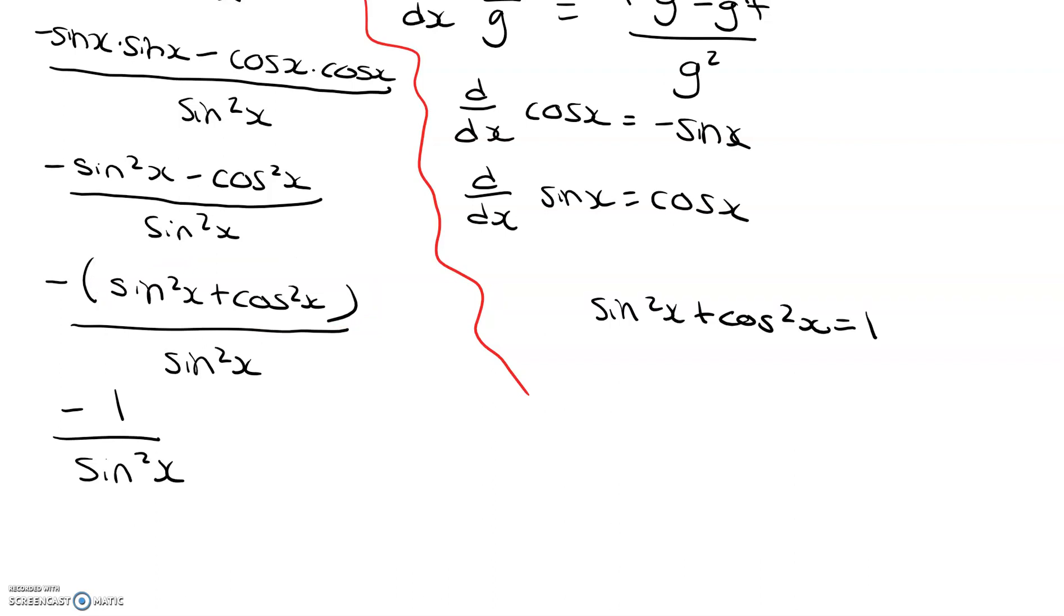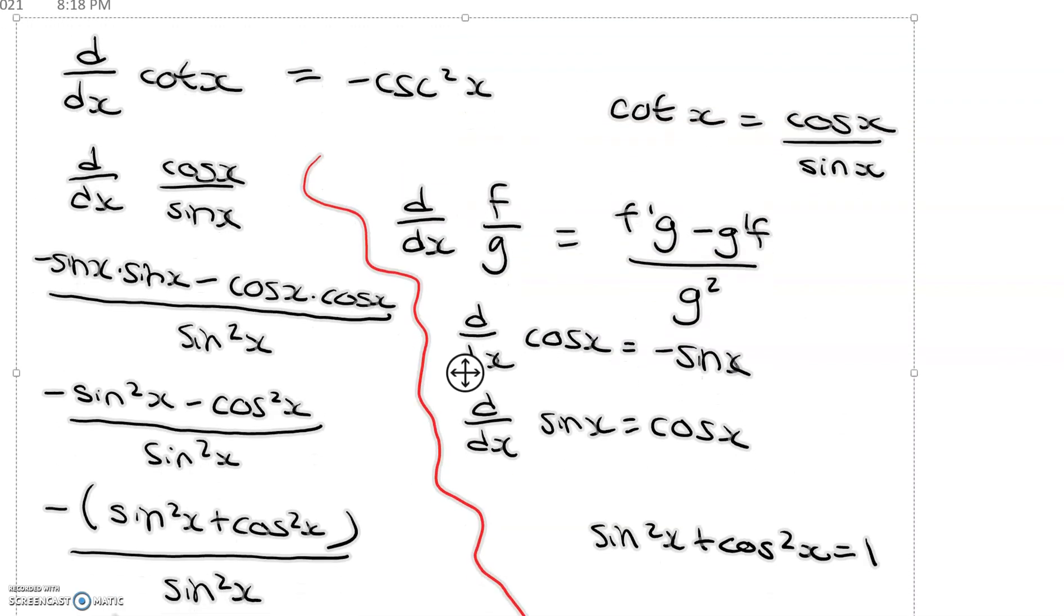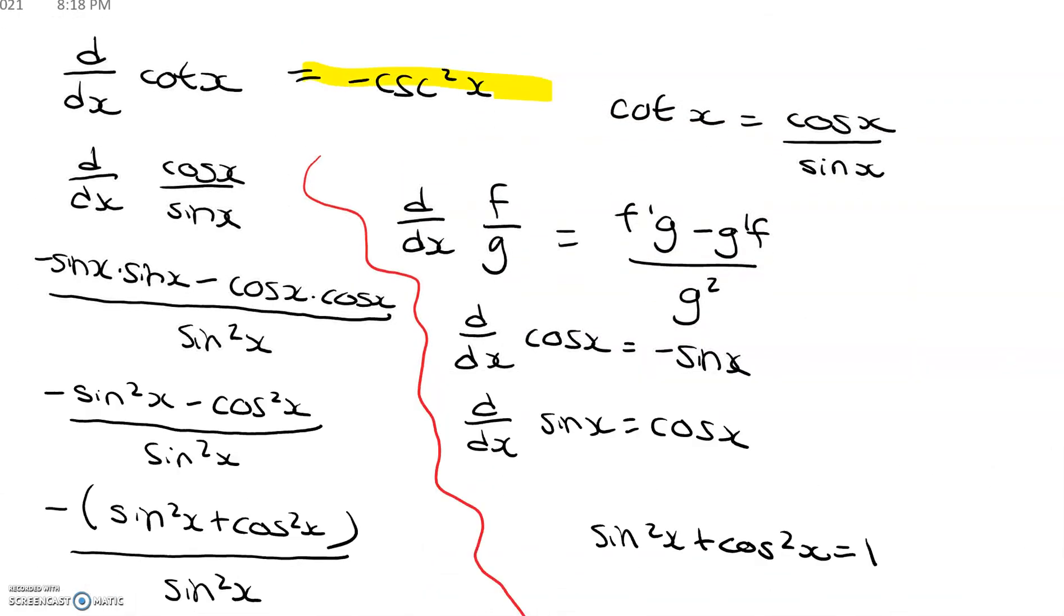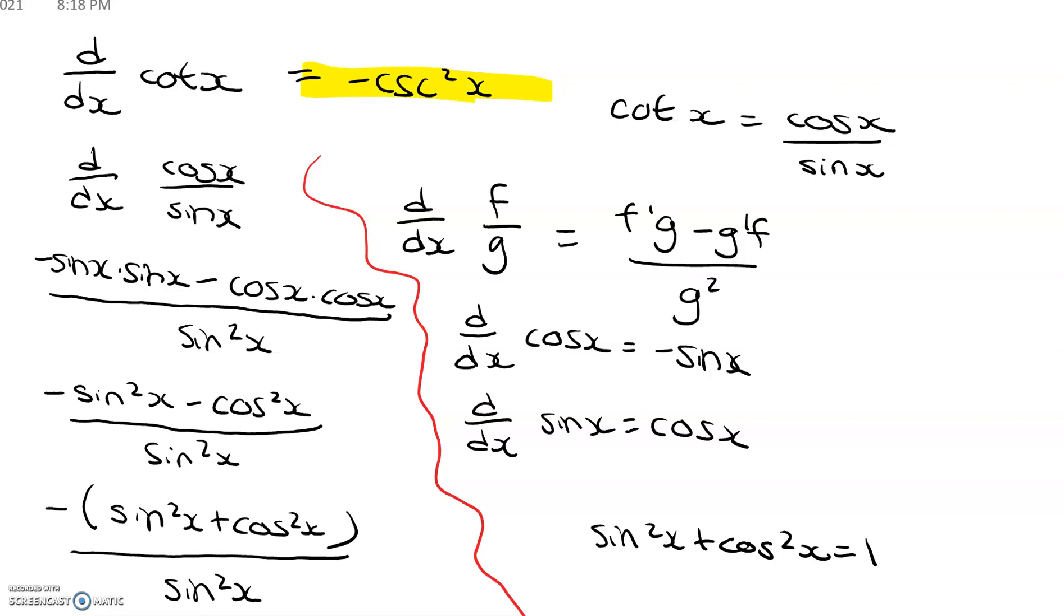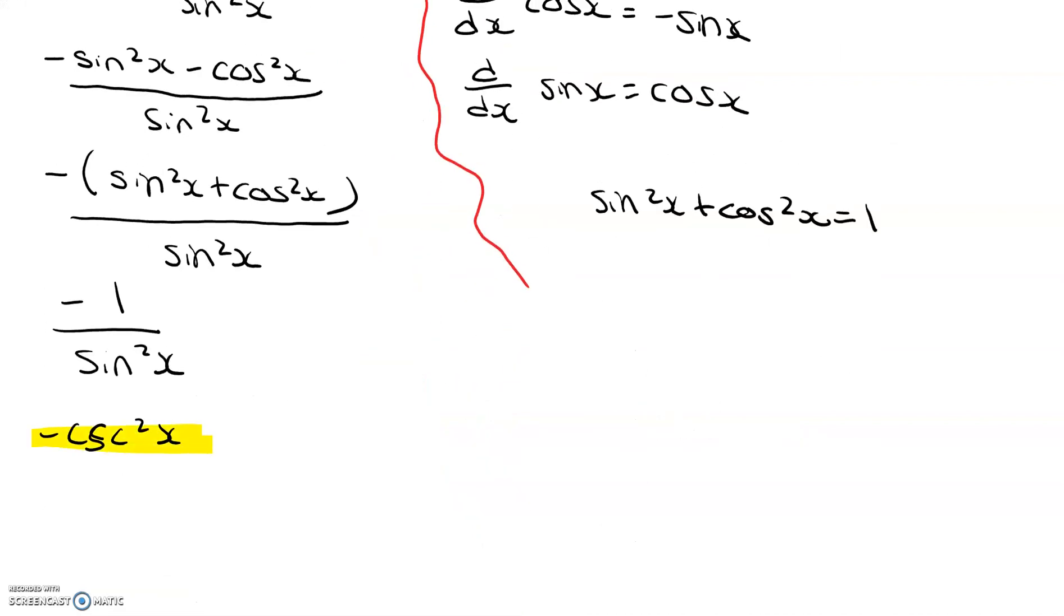Well, if we recall, cosecant squared x is the same thing as saying 1 over sine squared x. So, we can change this. Instead of saying negative 1 over sine squared x, we can say negative cosecant squared x. Well, isn't that what we were told that we were supposed to get at the beginning of this? Yeah, it was. So, there we go. We've completed our derivation.